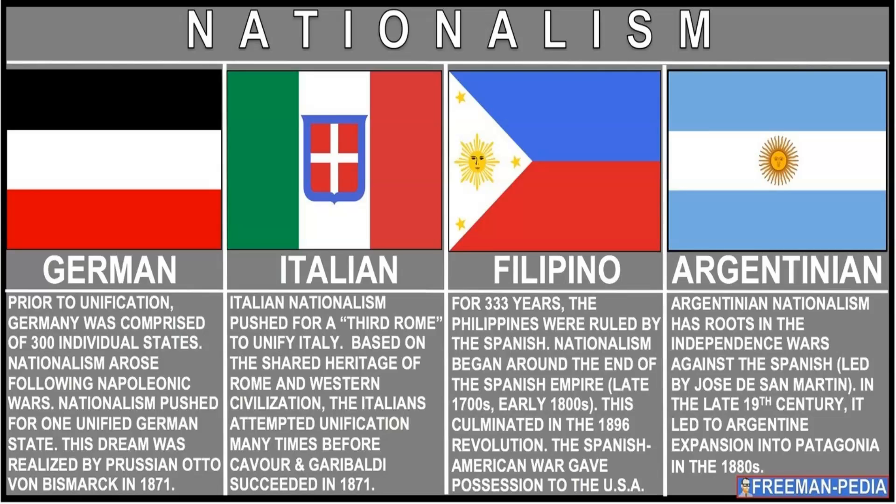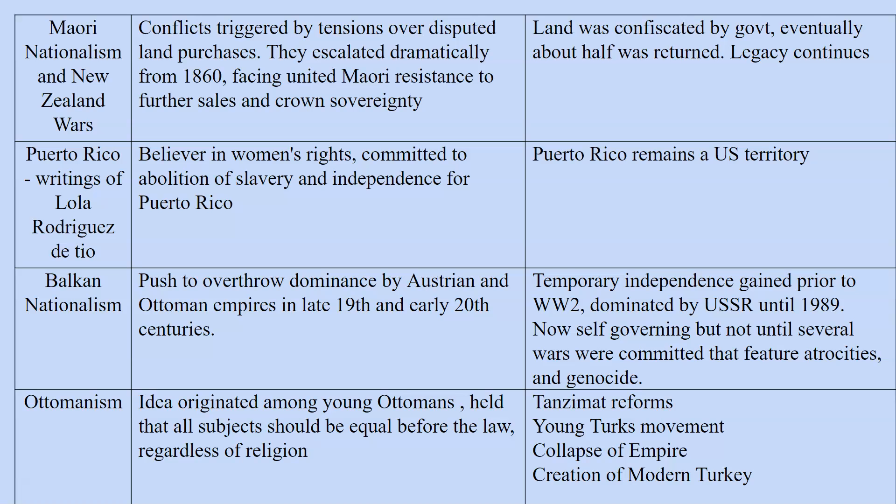Italy eventually succeeded in unification in 1871 under Cavour, Garibaldi, and Mazzini. In the Philippines, there was a big push of nationalism against the Spanish beginning in the 1700s as the Spanish Empire weakened, culminating in a revolution in 1896 — unfortunately just before the Spanish-American War, after which the United States took possession of the Philippines, holding them until the end of World War II when independence was granted. Argentina also had nationalism and independence movements in wars led by José de San Martín.